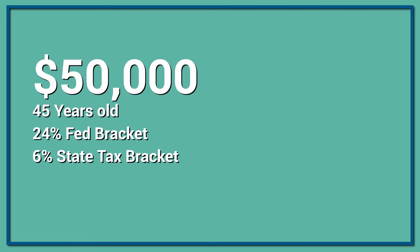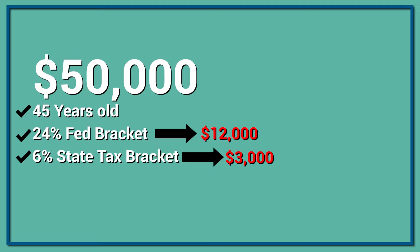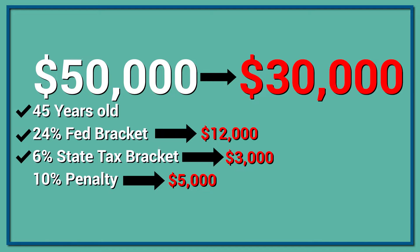Let's pull this all together with an example. Say you take a $50,000 distribution from your 401k, you are age 45, in a 24% Fed bracket and a 6% state tax bracket. The gross distribution is $50,000. Your Fed tax liability is $12,000, your state tax liability is $3,000, and then the 10% penalty adds $5,000. So your $50,000 went down to $30,000 — you had to part with 40% of that balance in taxes and penalties. This also highlights that the 20% mandatory Fed withholding is only $10,000, but you owed $20,000 total between Fed, state, and the 10% penalty — so budget for that extra $10,000 still due when you file your taxes.